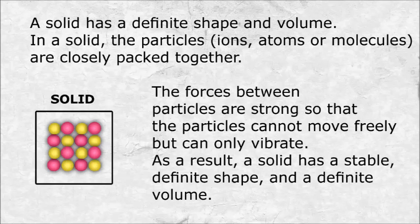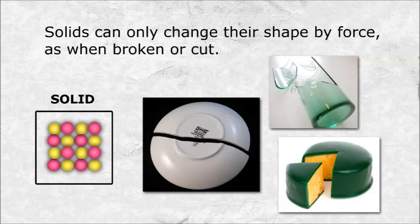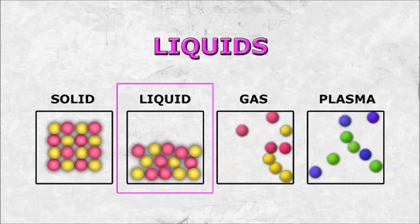A solid has a definite shape and volume. In a solid, the particles — ions, atoms, or molecules — are closely packed together. The forces between particles are strong so that the particles cannot move freely but can only vibrate. As a result, a solid has a stable, definite shape and a definite volume. Solids can only change their shape by force, as when broken or cut.